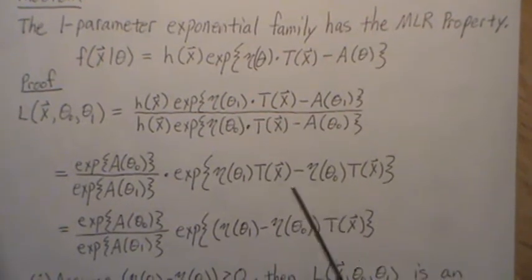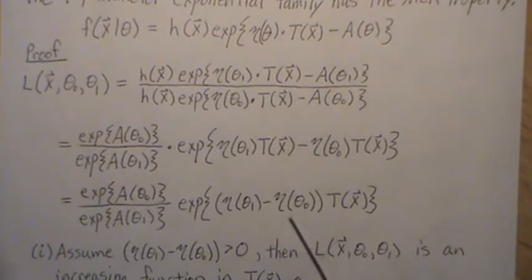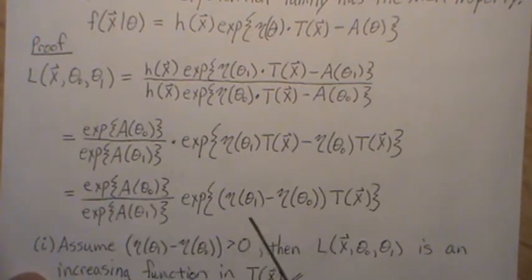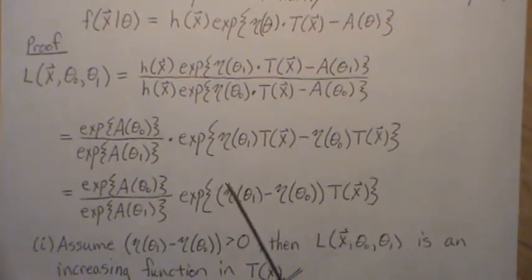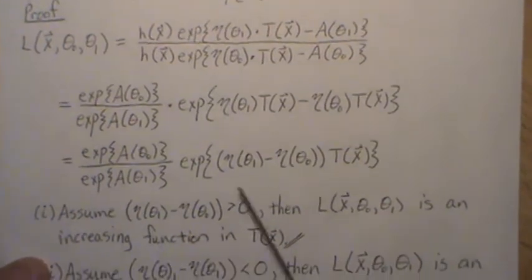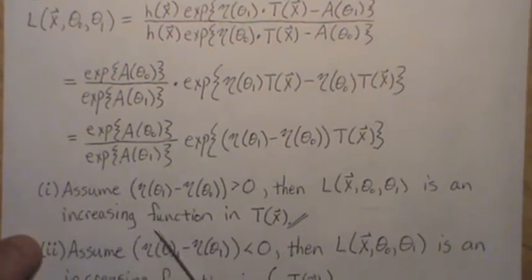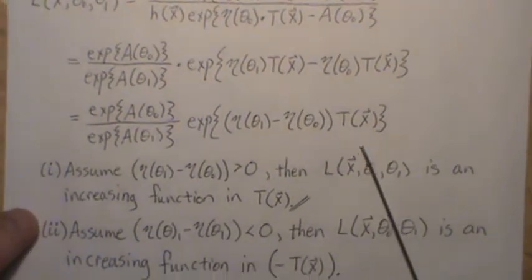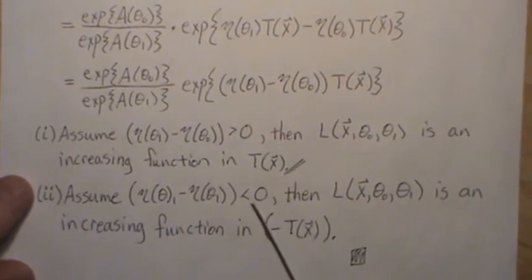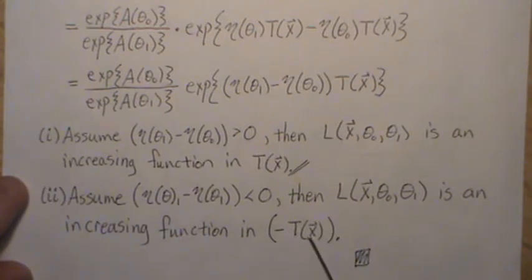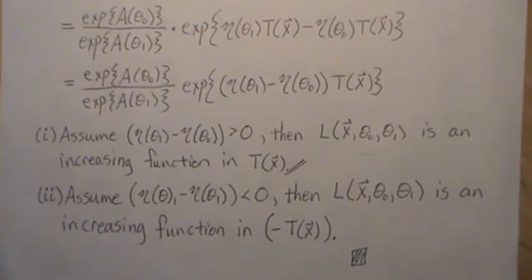We can then factor out T(x). Notice this coefficient in front of T(x) — if we assume this difference is positive, the likelihood ratio is an increasing function in T(x). If this difference is negative, the likelihood ratio is an increasing function in minus T(x). That completes the proof that the exponential family has the monotone likelihood ratio property.